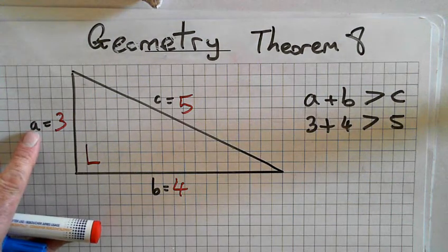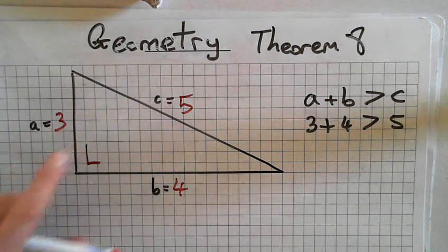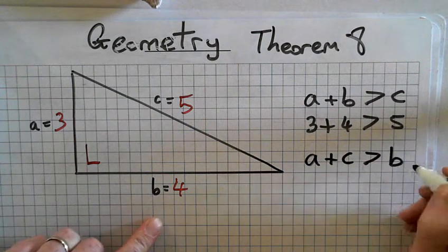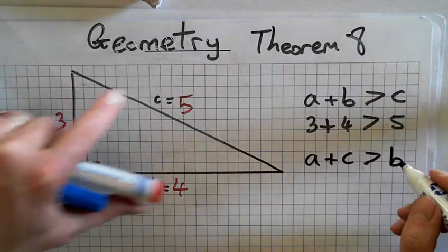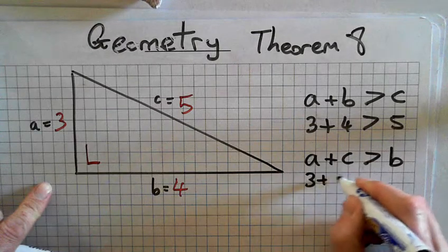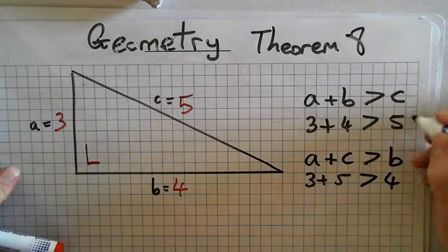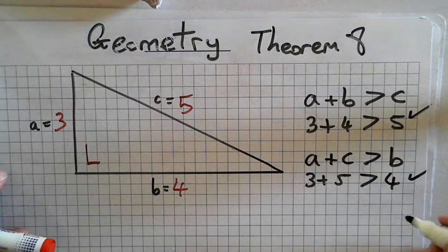If I add another one, A and C, is that greater than B? If I add these two, three and five is eight. Is that greater than four? Yeah. And what other combination can I do?